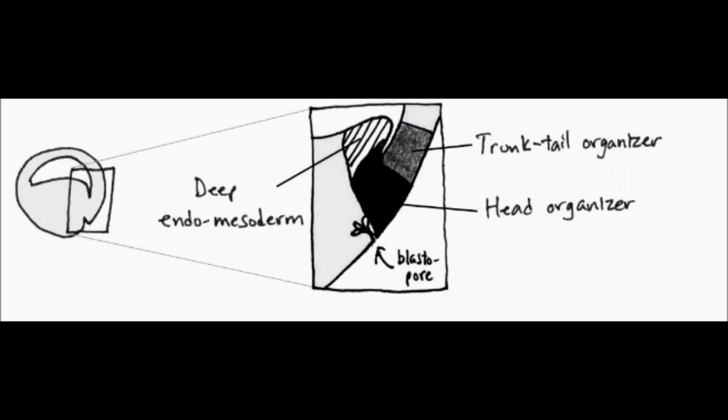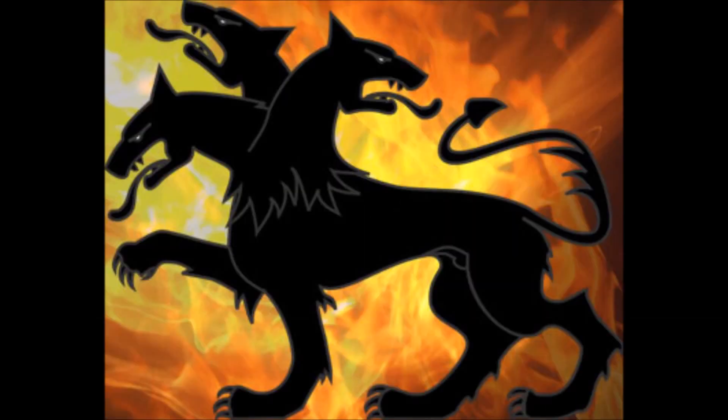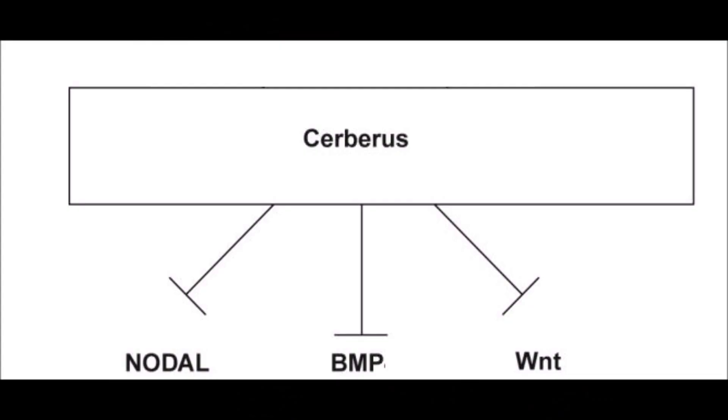The organizer is subdivided into three parts: deep endomesoderm, head, and trunk and tail. The three regions have different gene expression and result in different contributions to the embryo. The deep endomesoderm expresses Cerberus. This protein blocks BMP, Wnts, and Nodals. This results in liver, thyroid, and anterior gut.